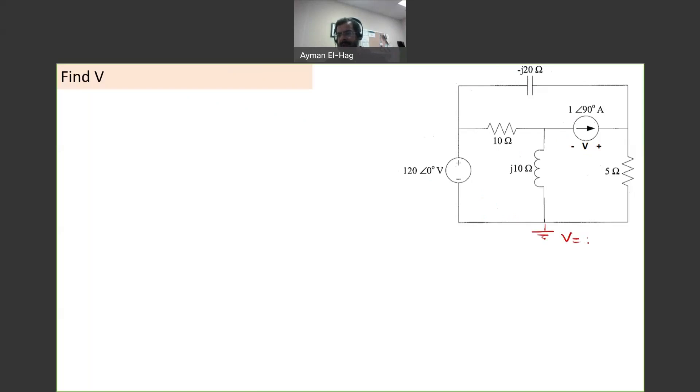Now, for this node, between this point and the ground, the voltage is 120 angle of zero. So we already know the voltage. So we need to find V1 and V2. So we have two unknowns.